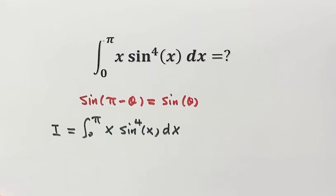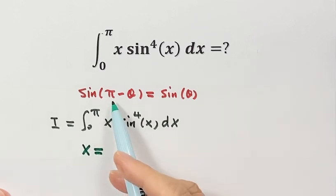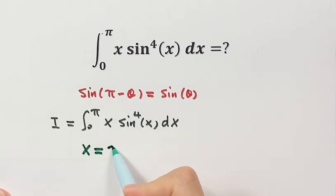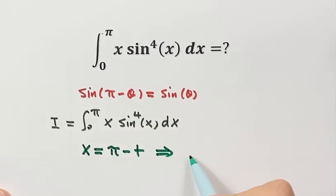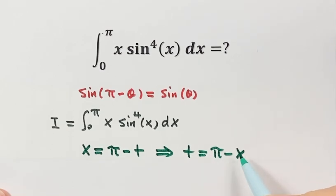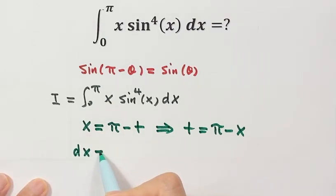So we are going to set x equals π minus t, where t is the new variable. Now let's solve for t: t equals π minus x. And let's figure out what dx is — that's just negative dt.